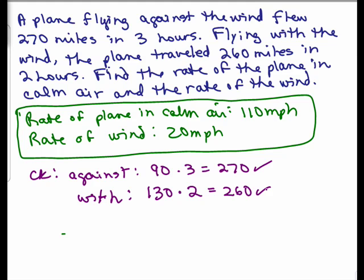Rate of the plane in calm air is 110 miles per hour and the rate of the wind is 20 miles per hour. So these are the steps to take to solve a problem when you're going against the wind or with the wind, or against the current or with the current, where there's two different rates that you have to deal with at the same time. Have fun.